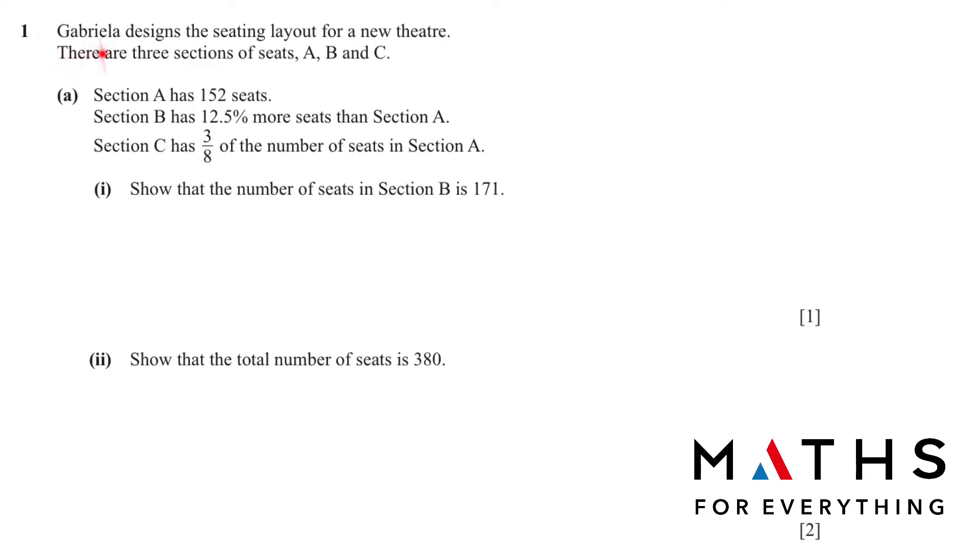Question number one. Gabriela designs the seating layout for a new theatre. There are three sections of seats A, B and C. We have been given section A has 152 seats. Section B has 12.5% more seats than section A. Section C has 3/8 of the number of seats in section A.